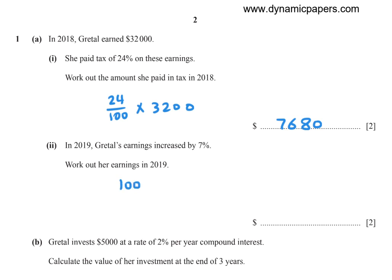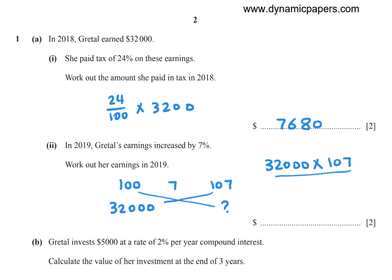Part (ii): In 2019, Egrittle's earnings increased by 7%. Work out her earnings in 2019. It was 100, increased by 7, now 107. Before the increase it was 32,000, so after the increase cross multiply: 32,000 times 107 divided by 100 equals $34,240.